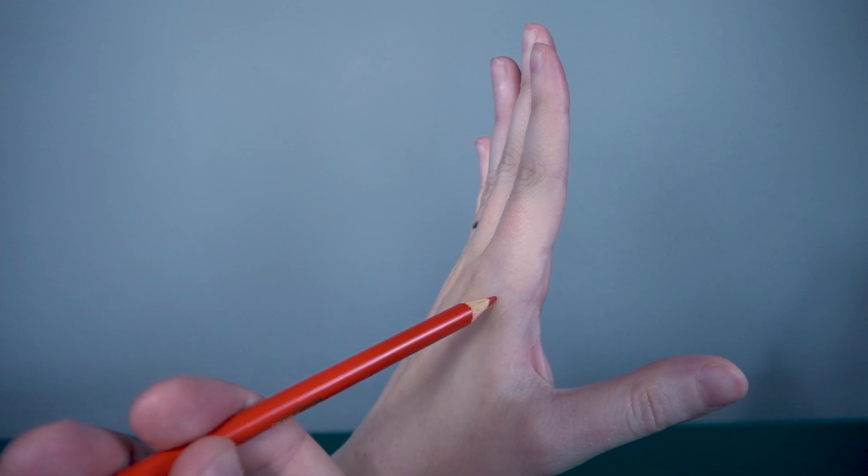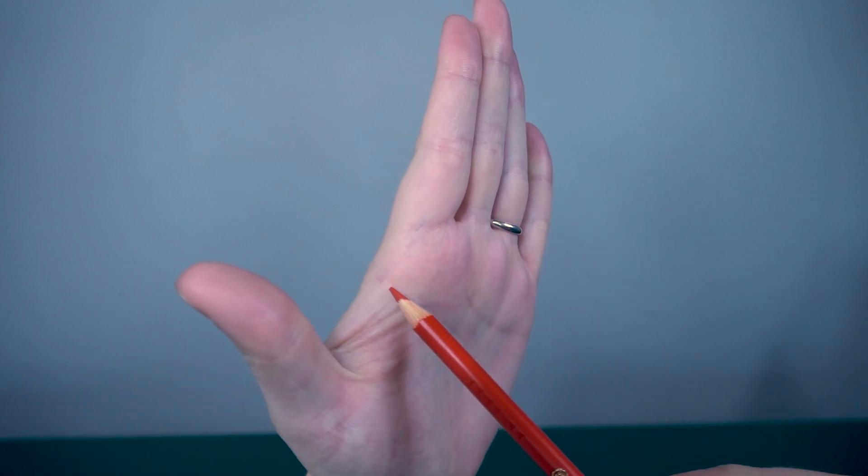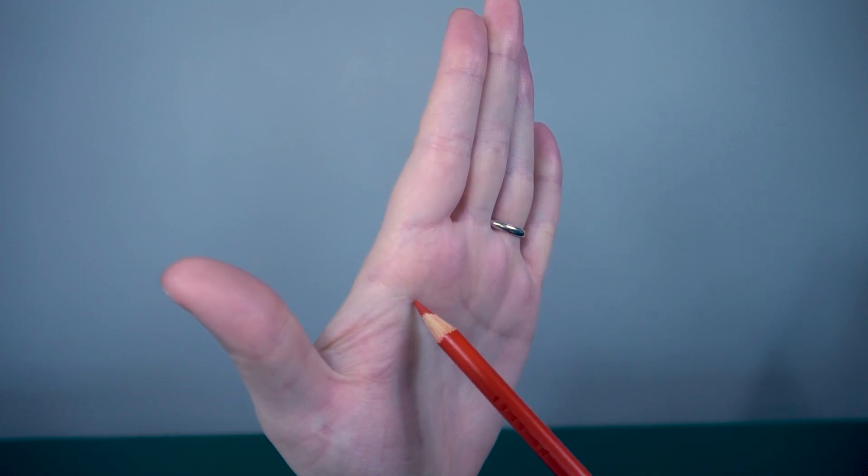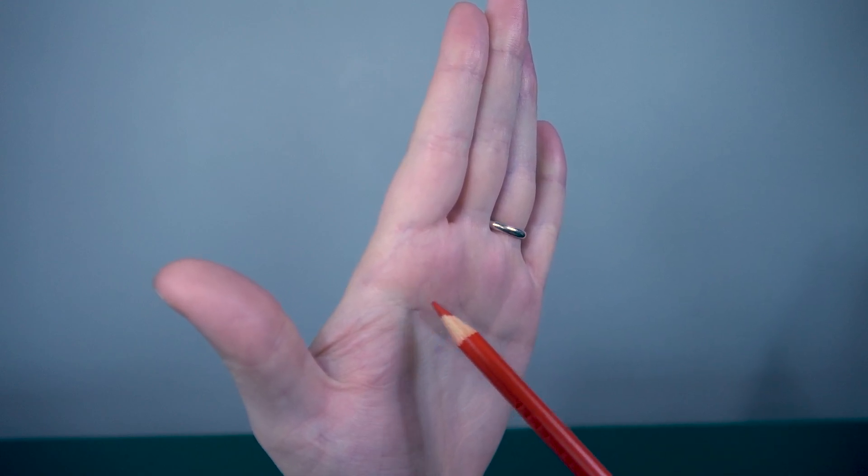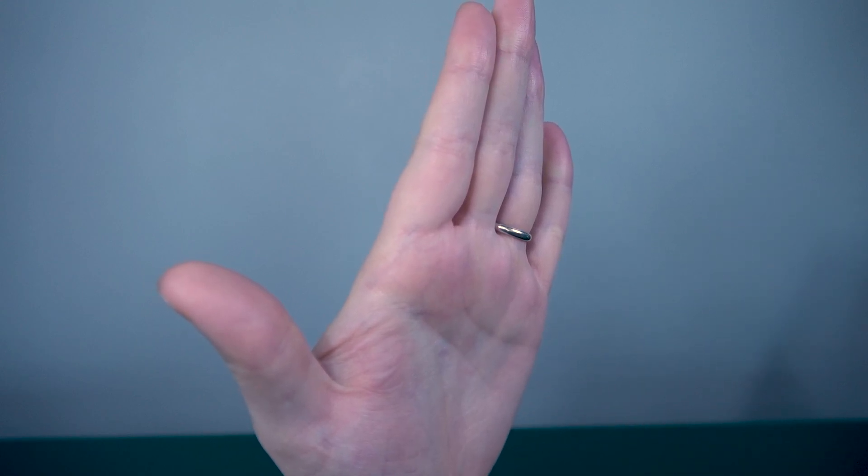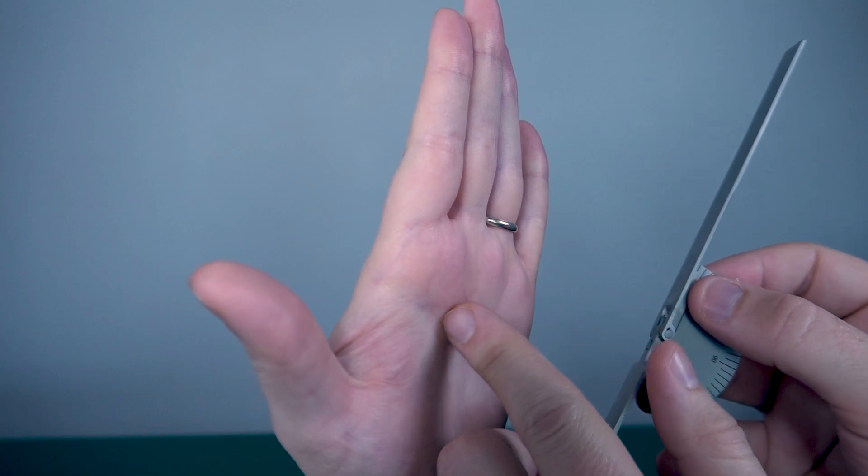Let's go on the opposite side of the hand. Right here is where the true MCP joint is, not up here. So you want to place the axis of your goniometer